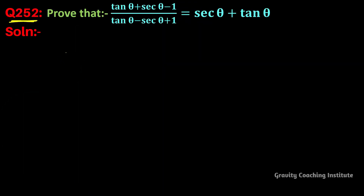Question number 252 proves that tan theta plus sec theta minus 1 upon tan theta minus sec theta plus 1 equals sec theta plus tan theta. We will use this identity first to write the LHS.